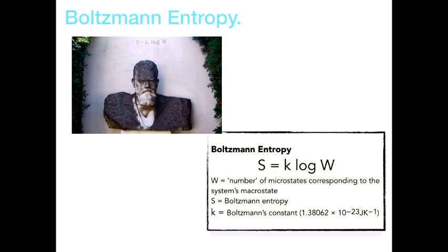So this is how Boltzmann understood entropy. He has his famous equation sketched onto his gravestone: S equals k log W. W you can think of as the number of microstates that correspond to the system's macrostate, S is the Boltzmann entropy, and k is his constant.